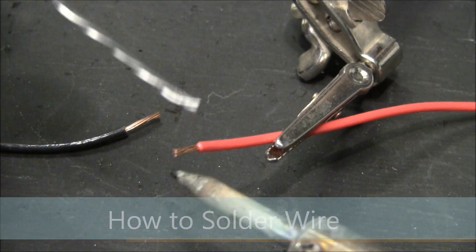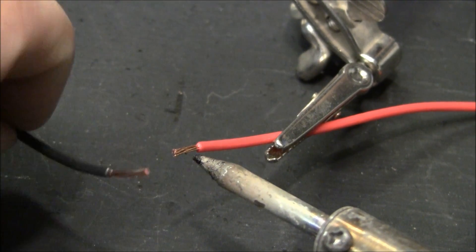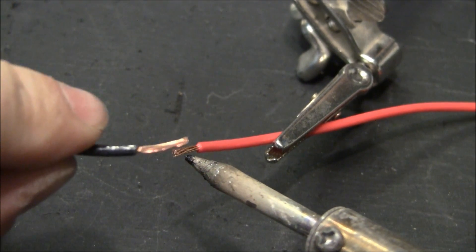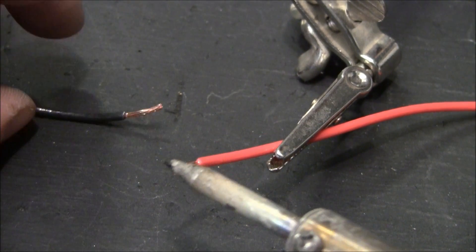When you're soldering, one of the first things you need to do is tin your wires or surfaces that you're going to solder together. You don't want to just stick them together and stick solder on it and expect it to work out.